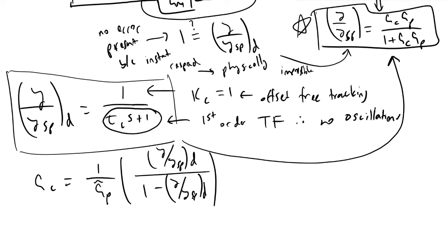And so the next thing that we will do is also plug in the actual value of y over ysp sub d, which is one over quantity tau_c*s plus one, as well as we're going to let GP tilde be equal to Kp divided by tau_p*s plus one.